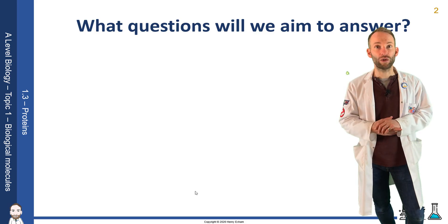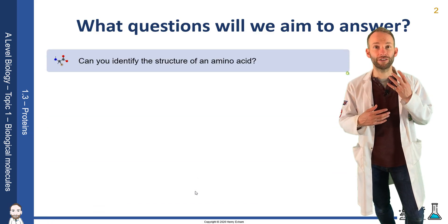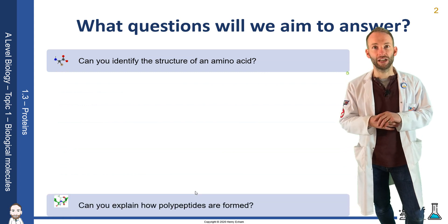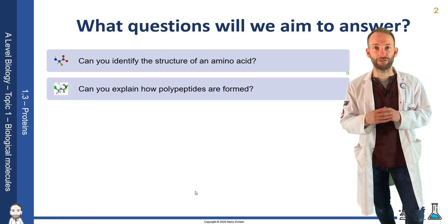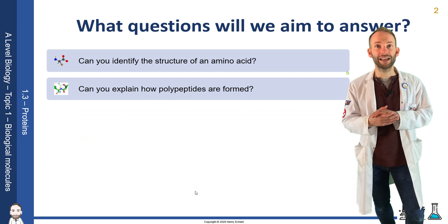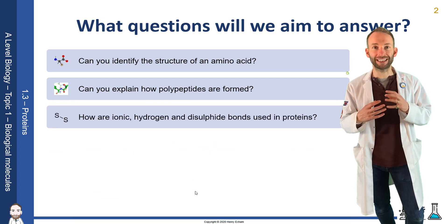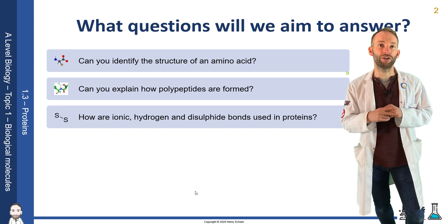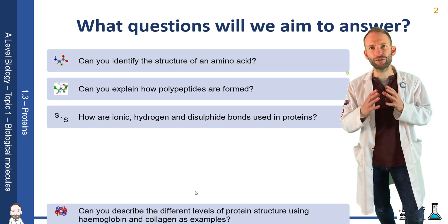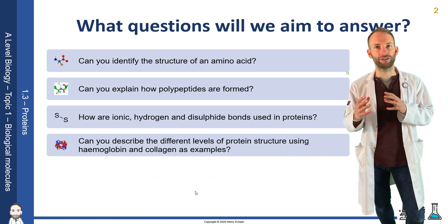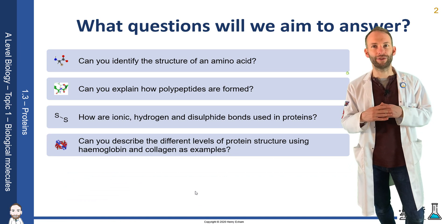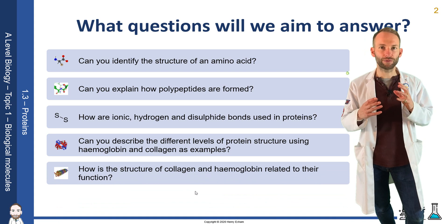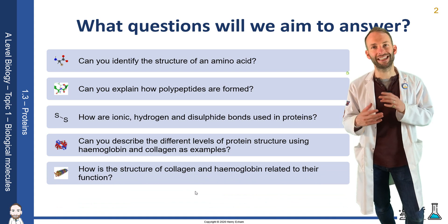So what are we going to learn about in this lesson? We're going to look at the structure of an amino acid — amino acids are what you need to build proteins. We'll explain how polypeptides are formed, which are long chains of amino acids, and we'll look at particular types of bonding that you get in proteins, such as ionic, hydrogen, and disulfide bonds. We'll look at the different levels of structure in a protein, specifically hemoglobin and collagen as our examples, and how their structure is related to their function.